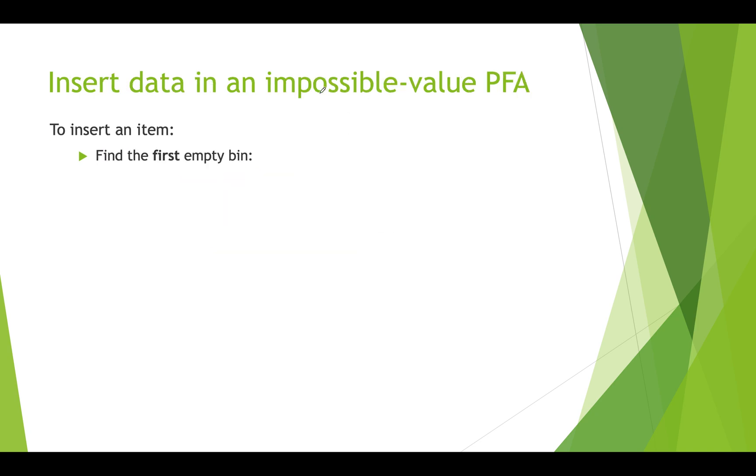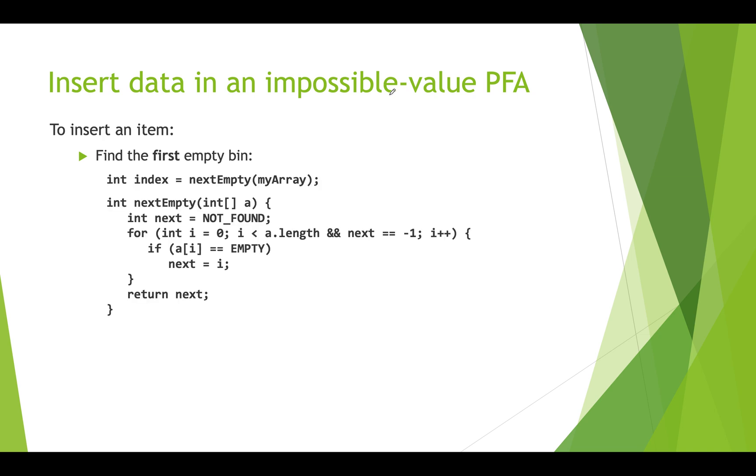Now if we want to insert data in an impossible value partially filled array, what we're going to do is we're going to go through our array and find the first empty bin. And what we're trying to do is get the index of that bin. So here we have int index equals nextEmpty of myArray. So nextEmpty is a function, we're passing the array in and it's going to give us back an index. So here's that function.